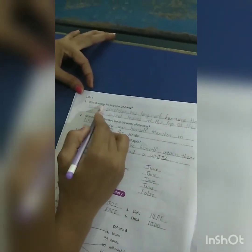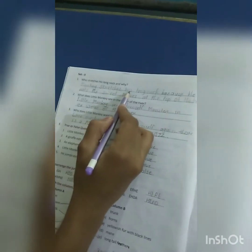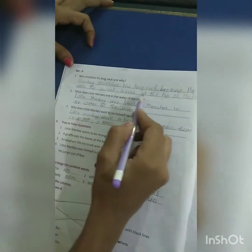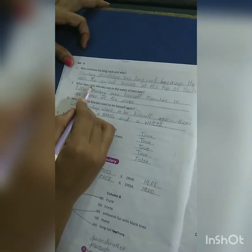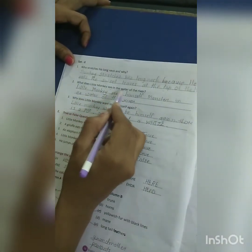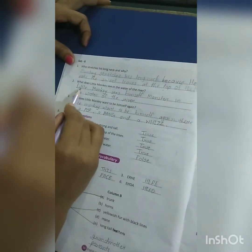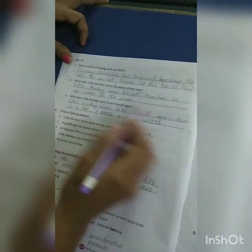Turn the page, page number 16. Question number 1: Who stretches his long neck and why? The monkey stretches his long neck because he ate the sweet leaves at the top of the tree. What does little monkey see in the water of the river? The little monkey sees himself, a monster, in the water of the river.